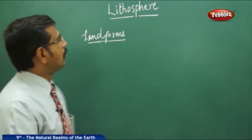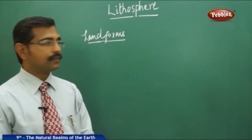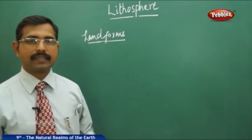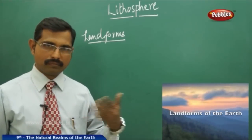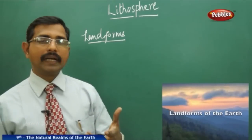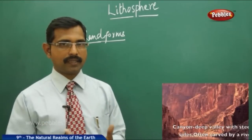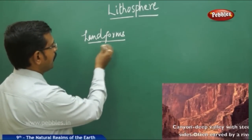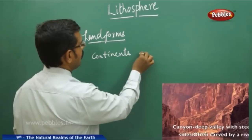Today we discuss about the lithosphere. Under the lithosphere, the major part is landforms. Usually we have two or more landforms. First we discuss about the primary landform. Primary landform is nothing but land and water — we have the primary landforms we will find on the earth's crust, also called first order landforms, composed of continents and oceans.